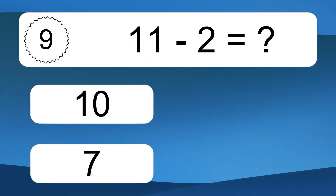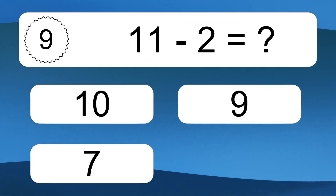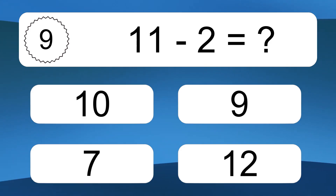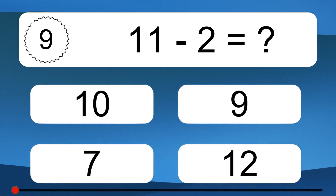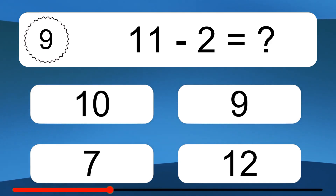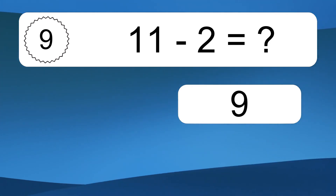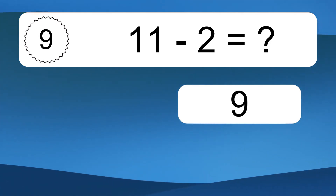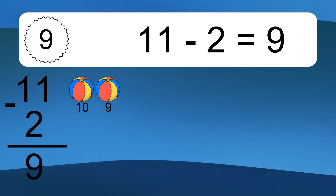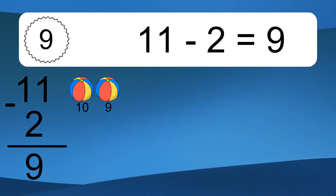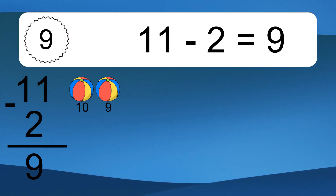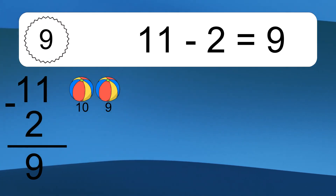11 minus 2 equals what? 11 minus 2 equals 9. Let's count it. 10, nine.